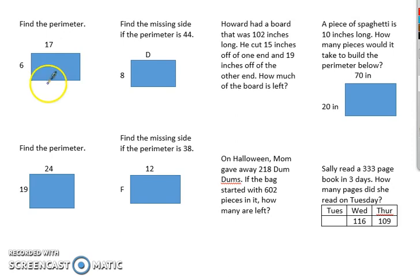Find the perimeter. Means this side is going to be seventeen. This side is going to be six. Six plus six is twelve. Seventeen plus seventeen is thirty-four. And I add them two together for forty-six.